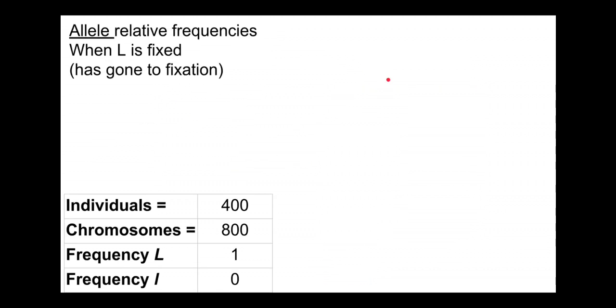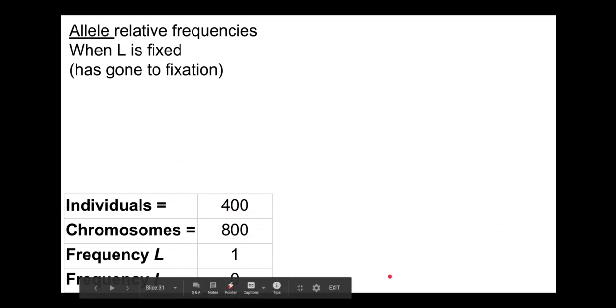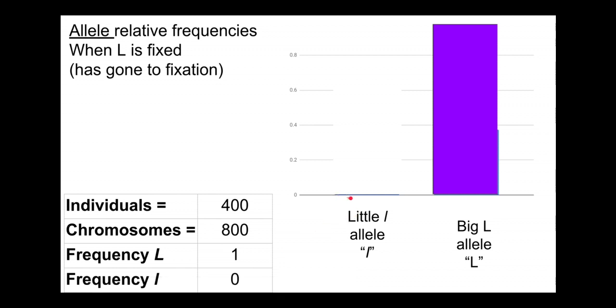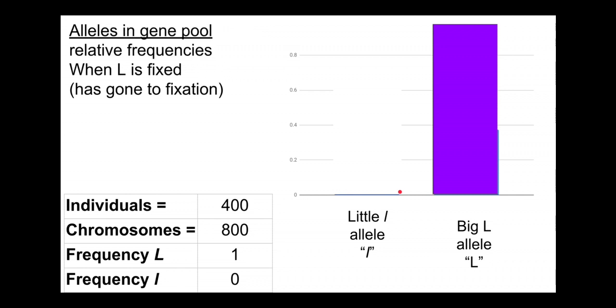So when an allele is fixed, that means the frequency is one. So if we have 400 individuals in our population, 800 chromosomes in our gene pool, that means the frequency of big L is one and the frequency of little l is zero. Fixed means gone.